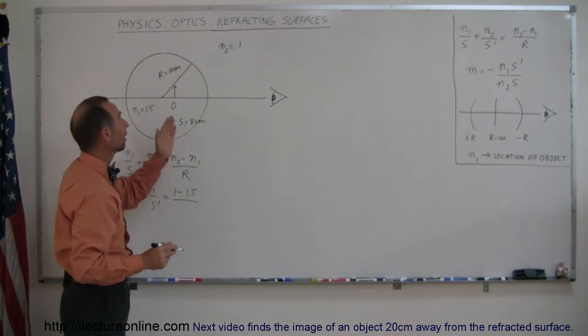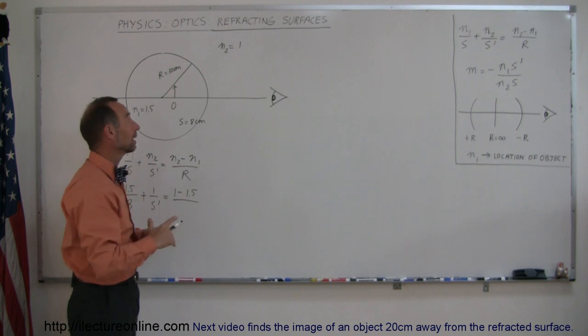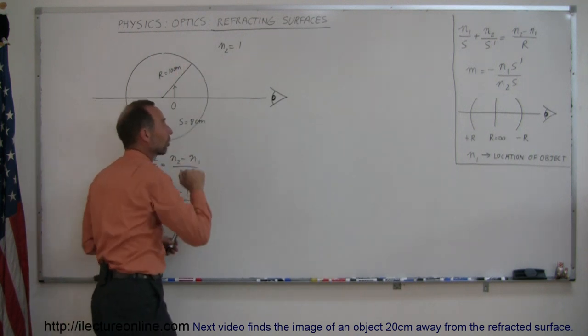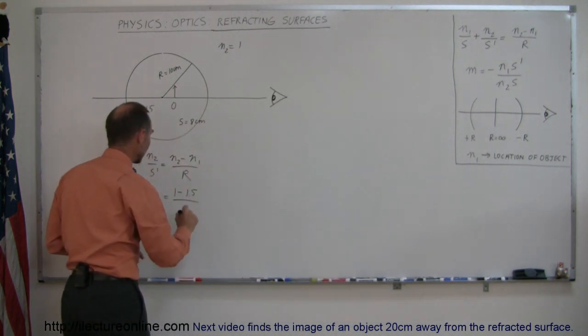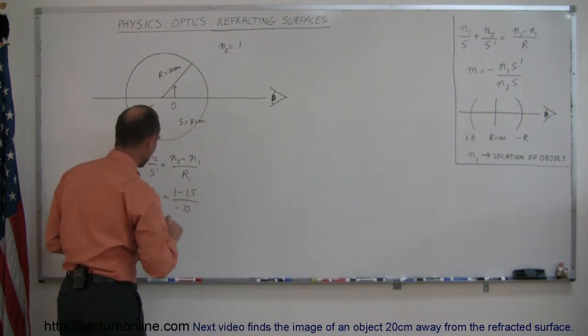Now r is 10 centimeters, but is it positive or negative? It bulges towards the observer. Towards the observer means a negative radius of curvature, so this becomes a minus 10 centimeters.